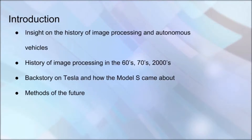Here's an introduction on the topics that we'll be covering today. With this video, you shall have a knowledgeable insight on the history of image processing and how it relates to autonomous vehicles, digital image processing tasks and their definitions. You'll also get an insight on the computer vision history of image processing in the 60s, how they transitioned into the 70s, and how they continued to innovate in the 2000s era. We'll also provide a backstory on Tesla and how the Model S Autopilot came about, other competitors that have made autonomous vehicles, and finally a brief talk about the methods of the future involving VPUs.